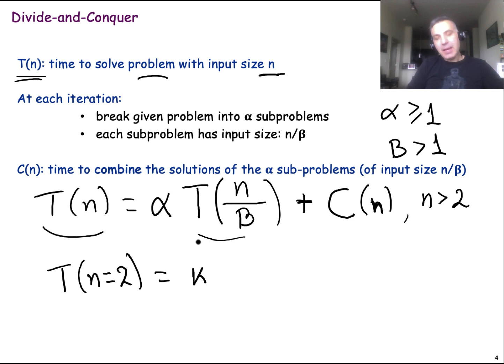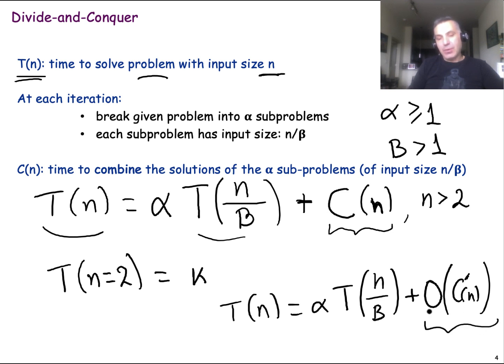Now, in some cases, we will not actually write exactly what is the time to combine the solutions. We may write something like this. So this is not so accurate. It's basically telling you that the time to combine the solutions is upper bounded asymptotically by some function C prime of n. So sometimes we will be using this notation.